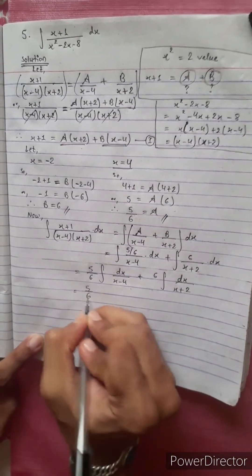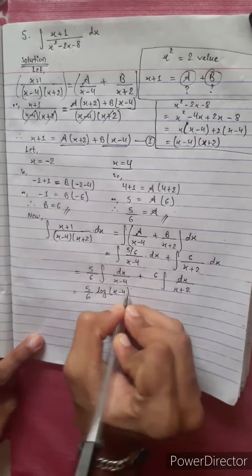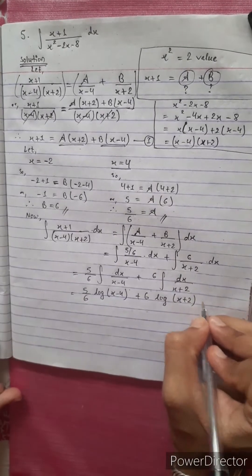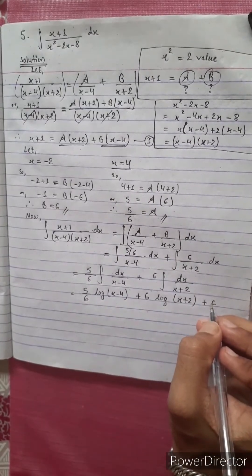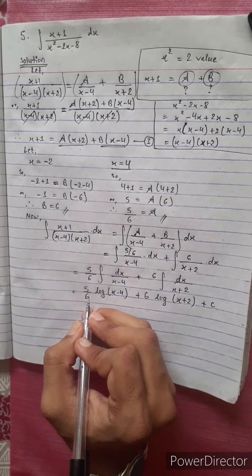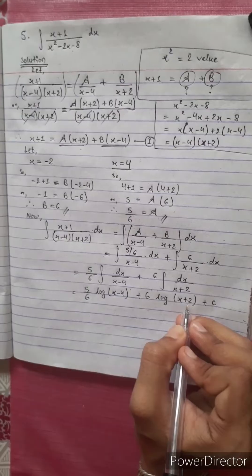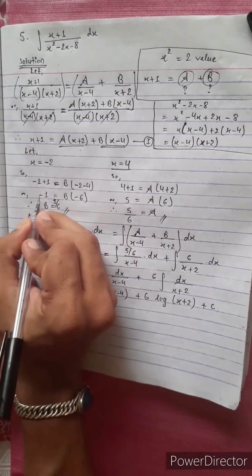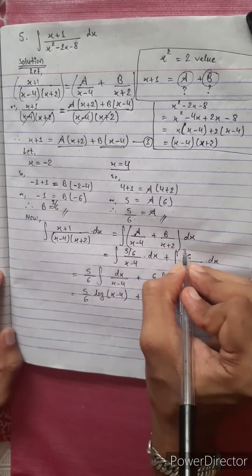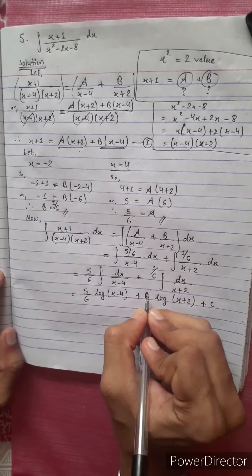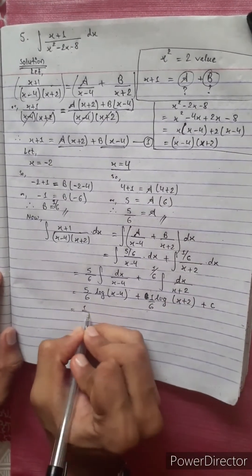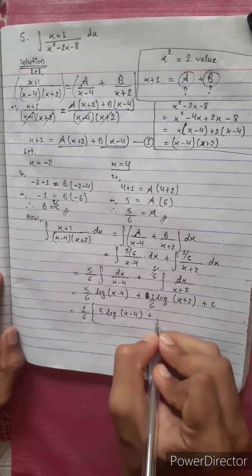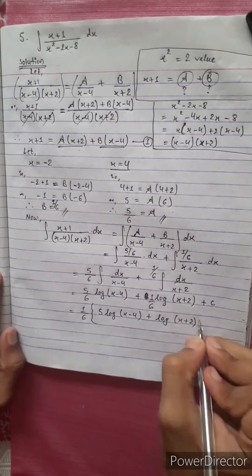Taking the constants outside: 5 by 6 times integration of dx over (x minus 4) plus 1 by 6 times integration of dx over (x plus 2). Applying the standard log formula, the answer is 5 by 6 times log(x minus 4) plus 1 by 6 times log(x plus 2) plus C. Taking 1 by 6 as common factor: 1 by 6 times [5 log(x minus 4) plus log(x plus 2)] plus C.